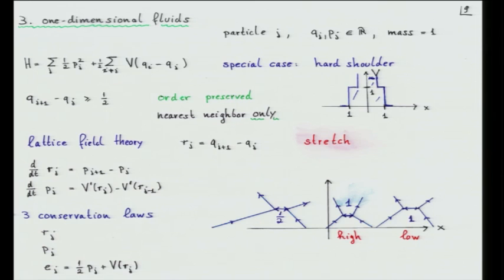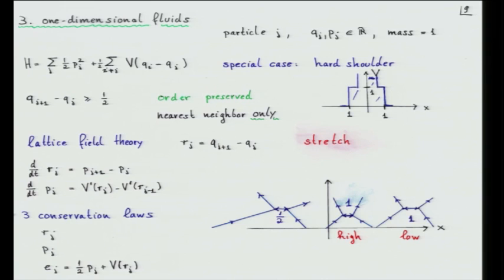The type of dynamics: if two particles happen to be 1/2 away, they are at the hard core and do a spectral reflection — one is displaced and continues on the other side with the same velocity. When they are distance 1, there are two situations: low relative momentum — they are simply reflected. But they can have sufficiently high energy and move over the potential barrier, slowing down a little. This is the deviation from the ideal gas and produces the mixing needed for the hydrodynamic theory.